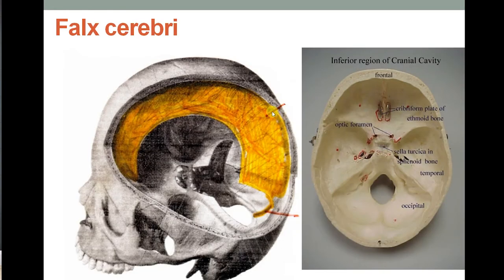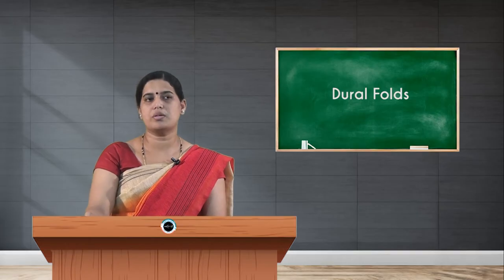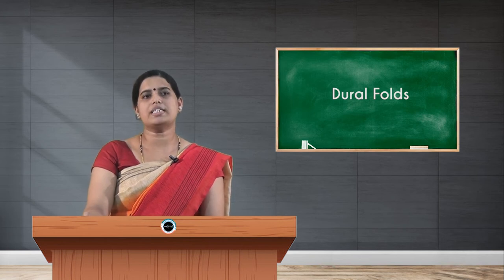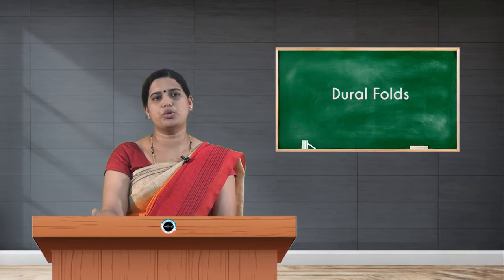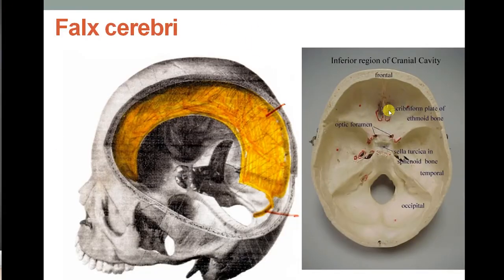Coming to the first dural fold — falx cerebri. It is a large sickle-shaped fold of dura mater; the term 'falx' refers to that sickle shape itself. It is seen between the two cerebral hemispheres across the median longitudinal fissure. Its anterior attachment is narrow and it is attached to the crista galli on the cribriform plate of the ethmoid bone.